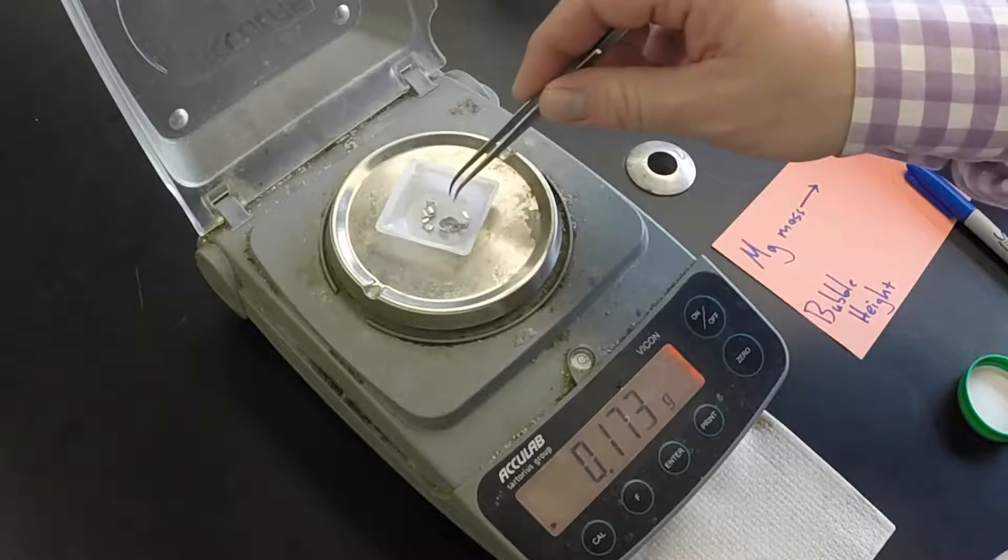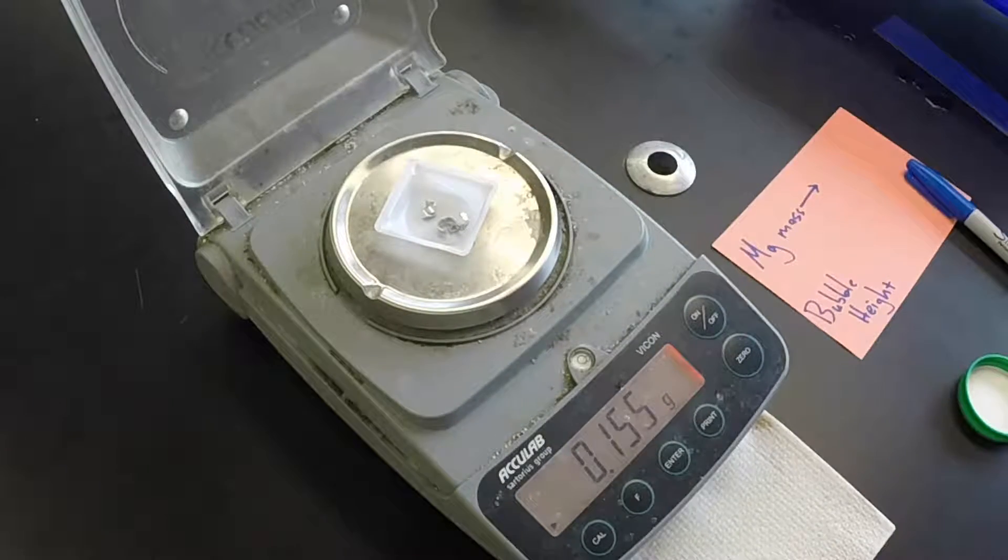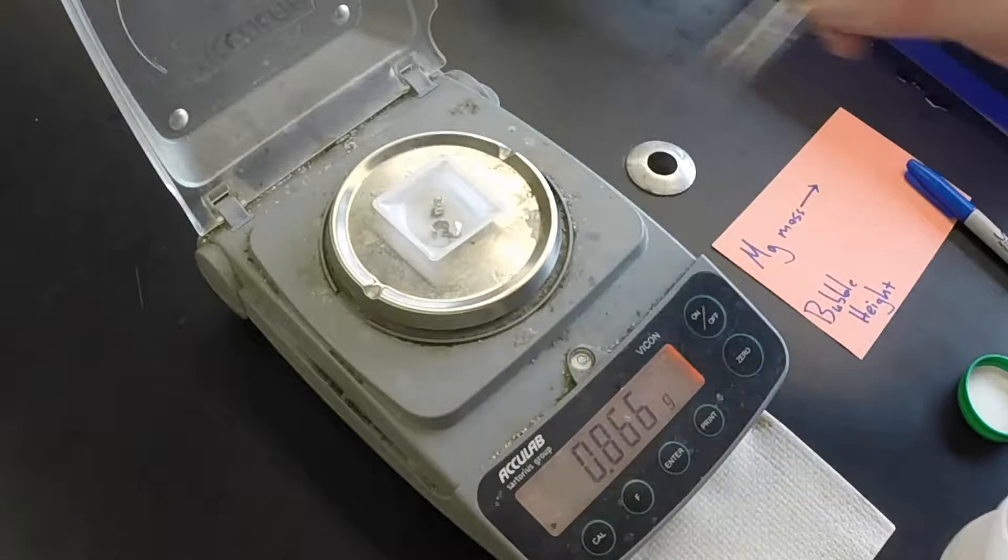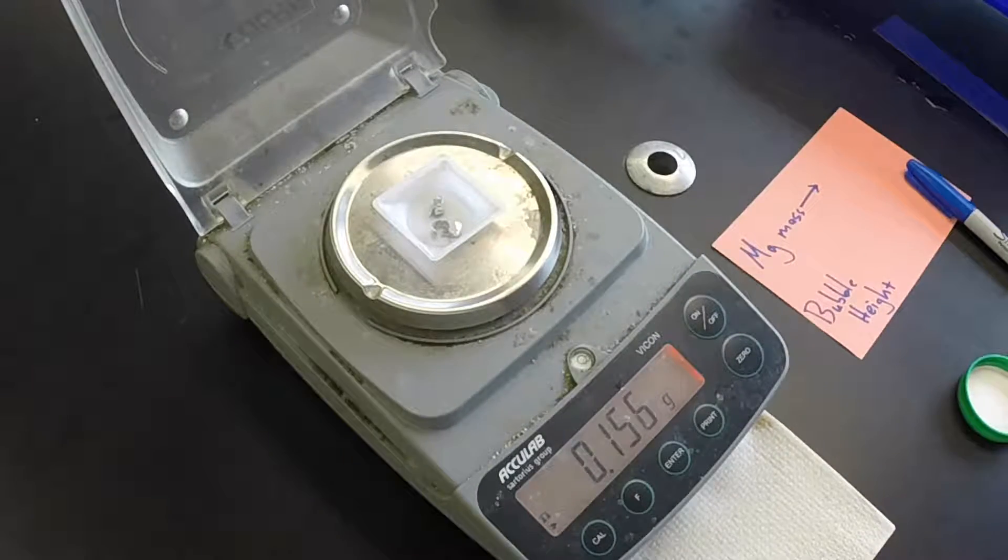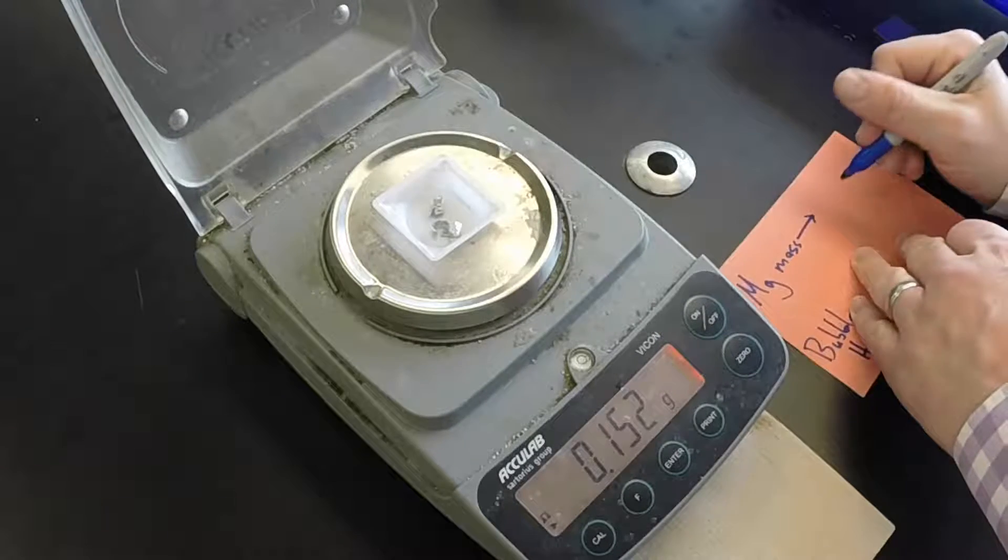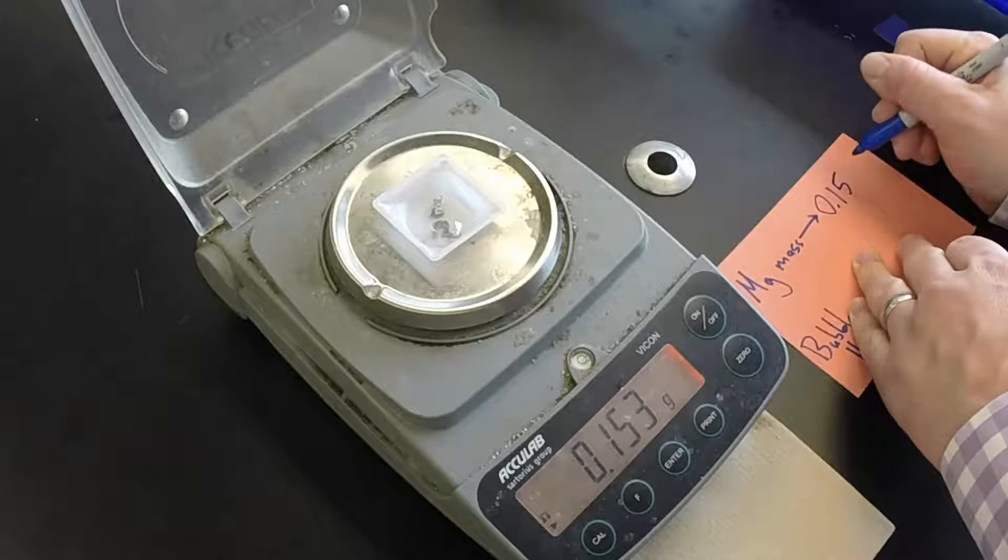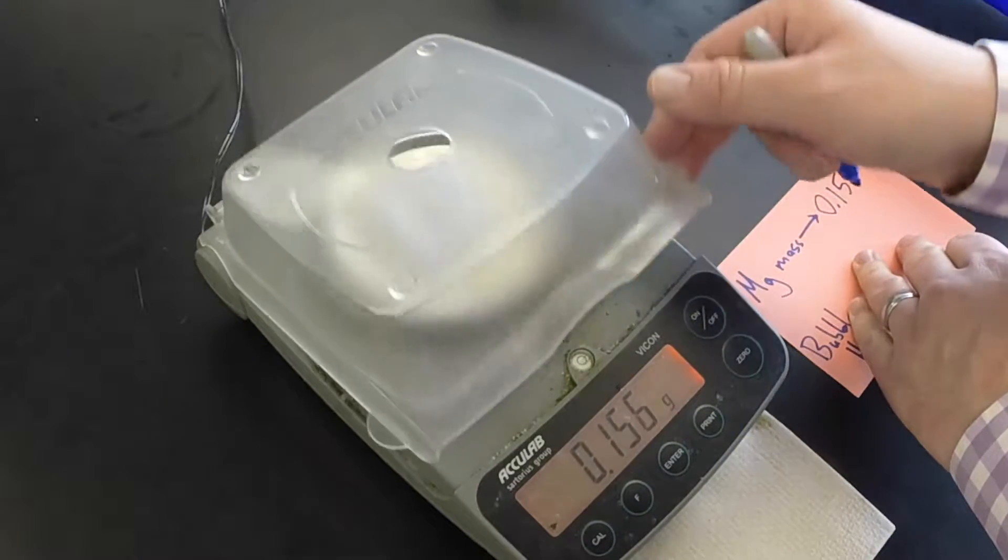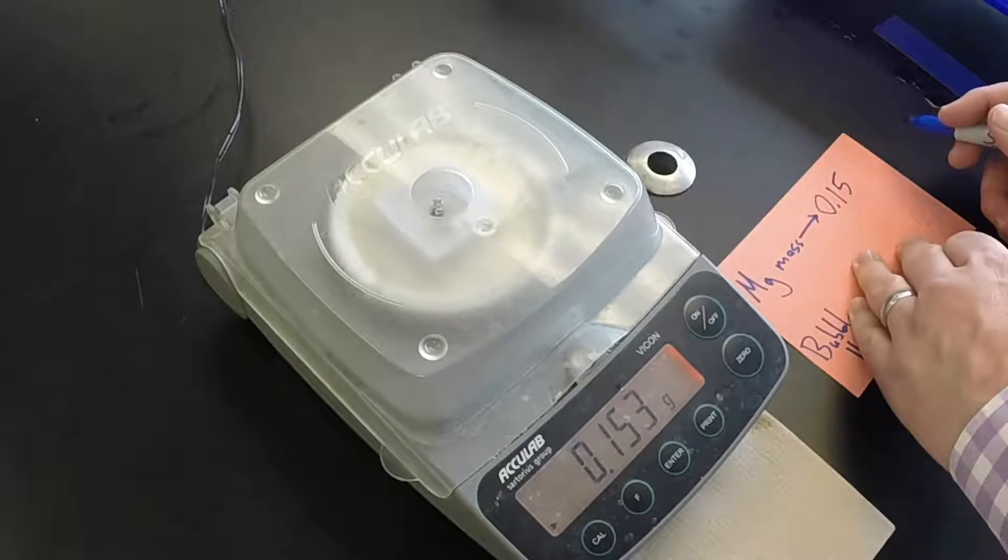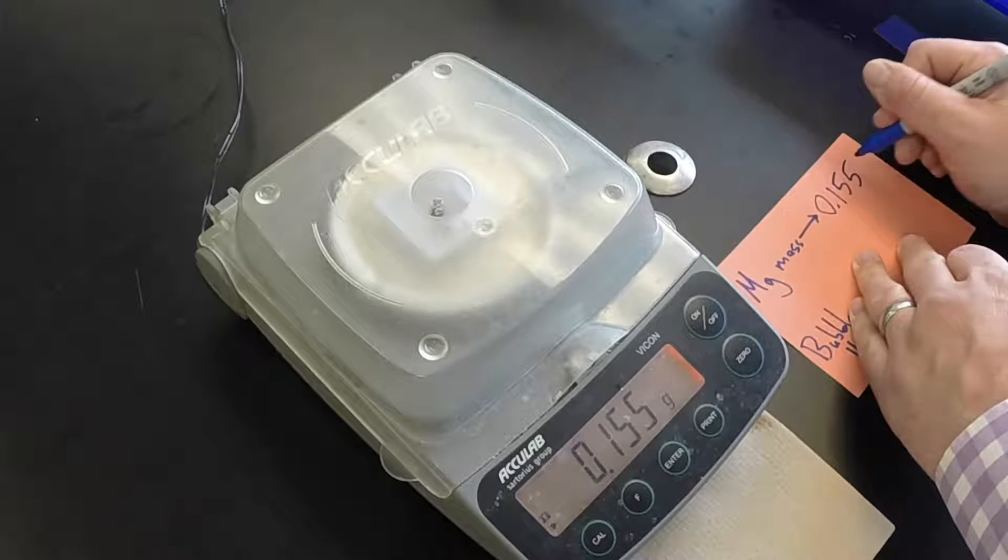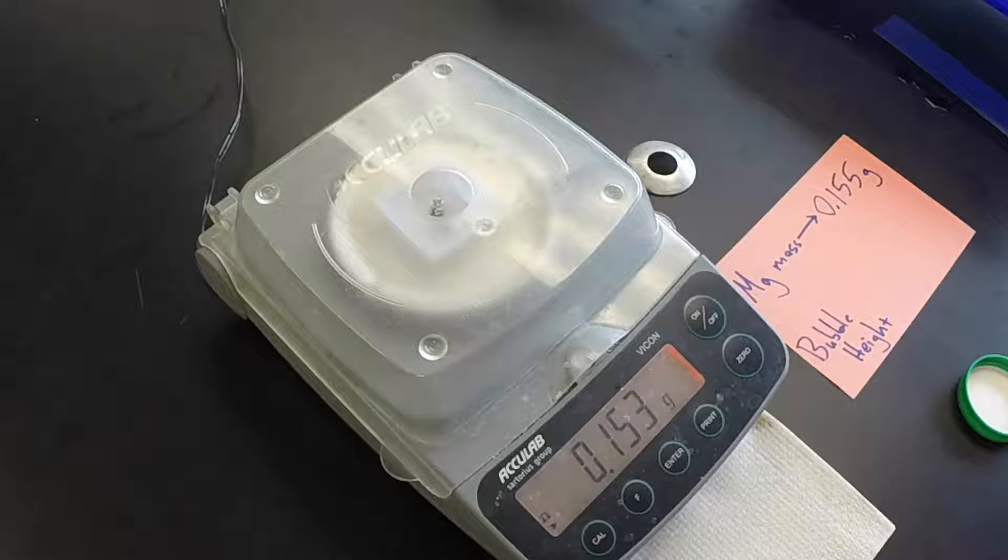Okay, I'll take off one piece there. Actually, we'll go with that. So our initial mass of magnesium metal is 0.155 grams, 0.155 grams.